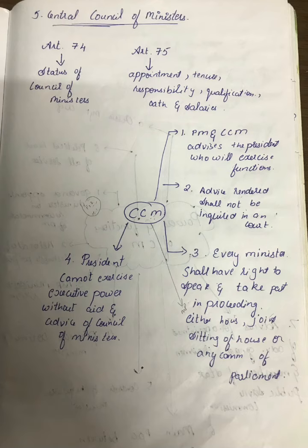What do you call by Central Council of Ministers? I'll use the short form CCM. The prime minister and the central council of ministers advise the president who will exercise its functions. The main role of CCM — that is the prime minister along with the council of ministers — they will be advising the president.